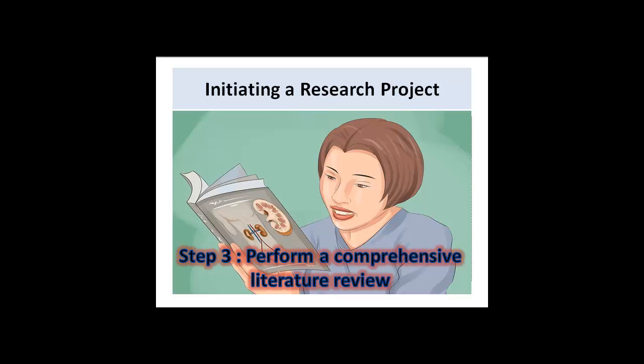Once you finalize your topic, gather as many related research papers from conferences and journals as you can. Read all this literature, including the latest ones and also those older articles that established the field from which you selected the topic. Although it is impossible to read every paper, read as much as you can so that you have expertise on the topic. Also make sure that you don't repeat an experiment that is already done, because there is no point in reinventing the wheel. One of the most important uses of the literature review is to identify what is already done and how it is done.